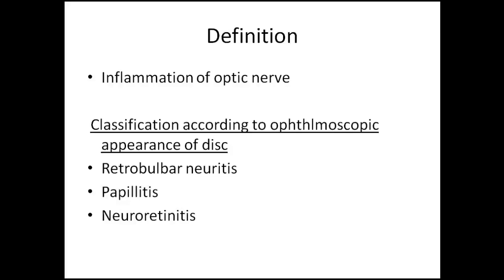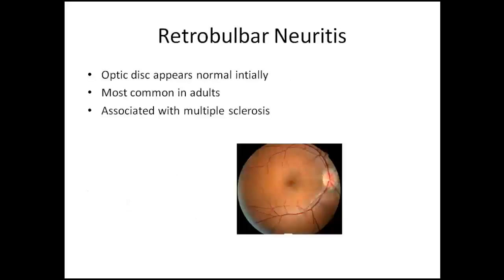In cases of retrobulbar neuritis, the changes are not seen in the optic disc, but there would be signs and symptoms of optic neuritis. You can't see those changes because the inflammation is behind the laminar portion. Retrobulbar neuritis is the most common type, most commonly occurring in adults. The optic disc appears normal initially, but later it can be associated with multiple sclerosis.